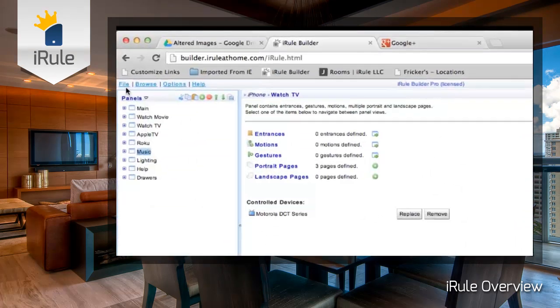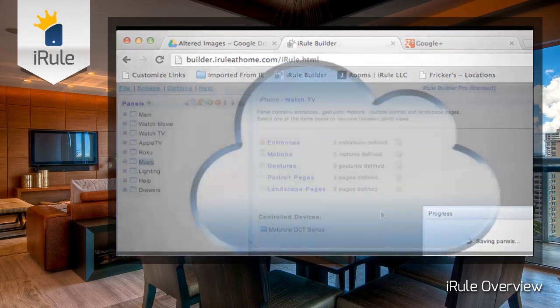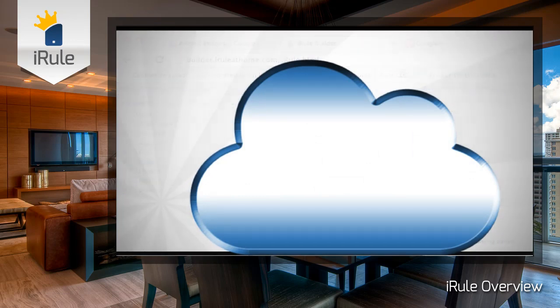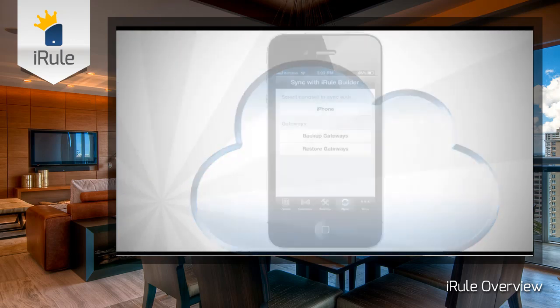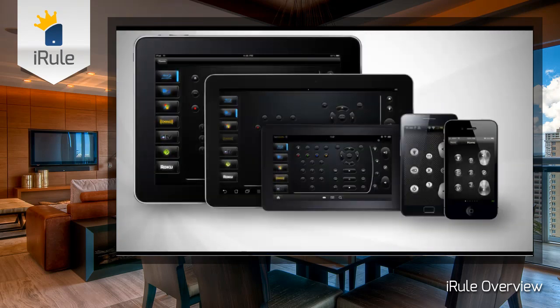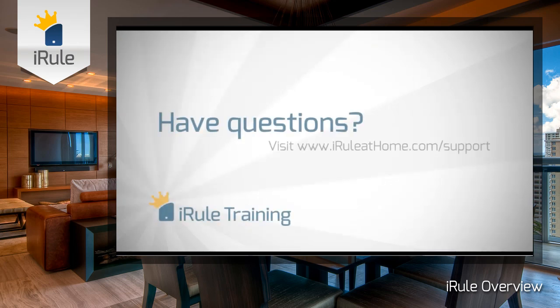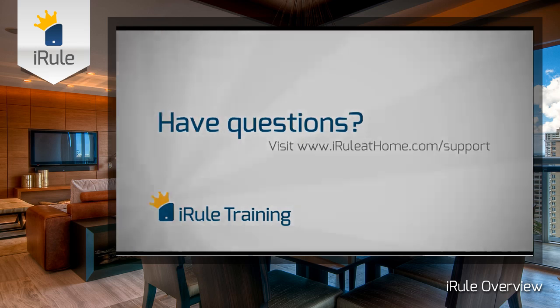Once you finish building your remote, you can save it in Builder, which saves it to the cloud. Once you open the app, you click sync, which will pull the project from the cloud and into your phone or tablet, allowing you to use your new universal remote control. If you have any questions or need a little extra help, check out the support page on our website, iruleathome.com.